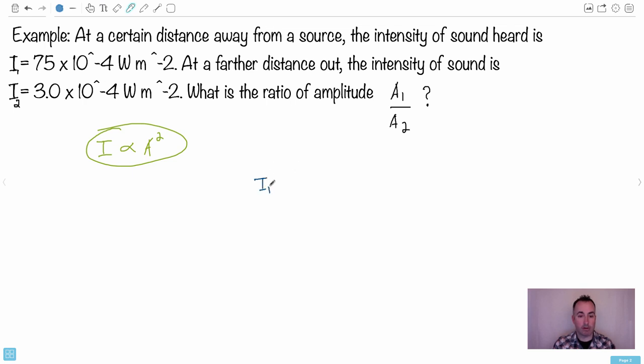So I have I₁ over I₂. I₁ equals some constant k times A₁ squared, because isn't that the equation? I₁ = kA₁². And then I could divide this whole equation by I₂ = kA₂². See where it came from? You can divide the two whole equations. You can say I₁/I₂ is kA₁² over kA₂². The k's cancel out, which is good.